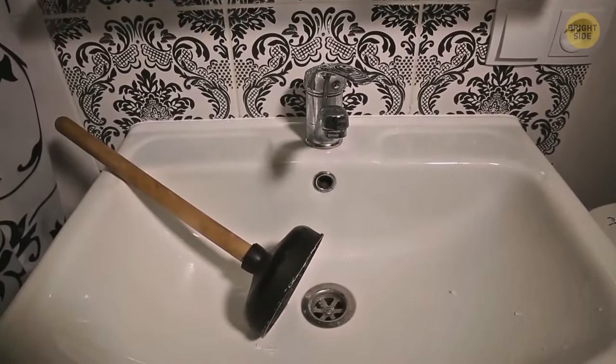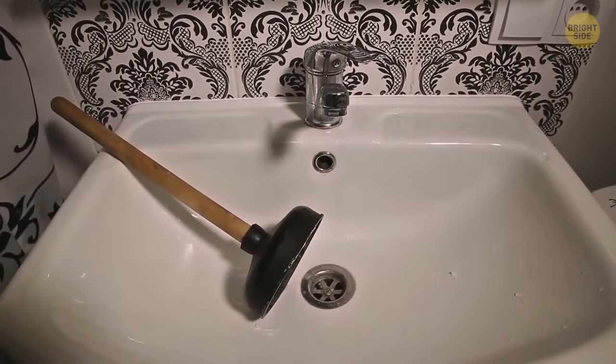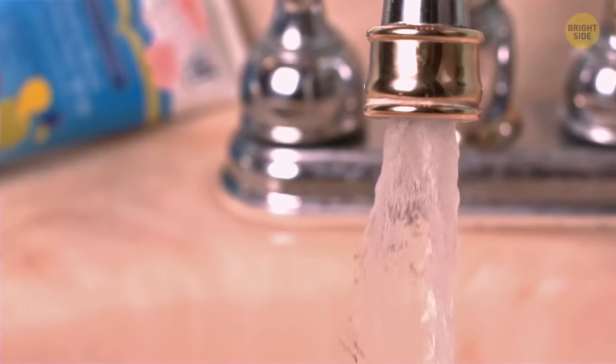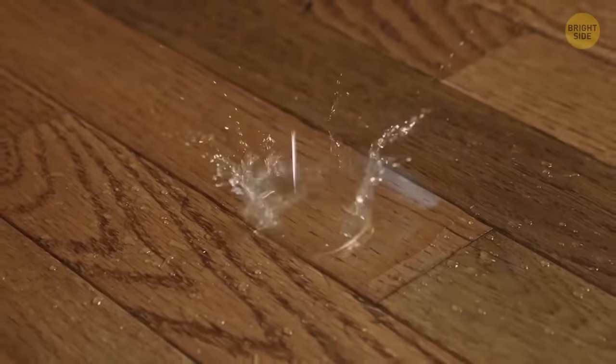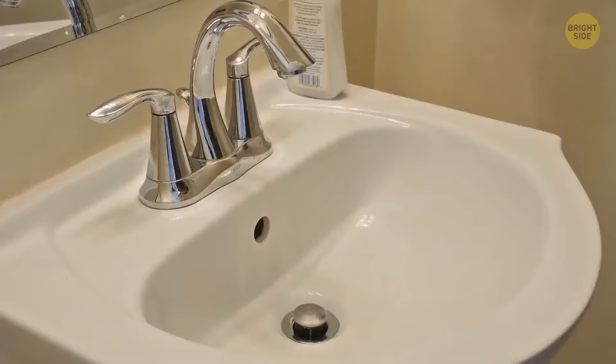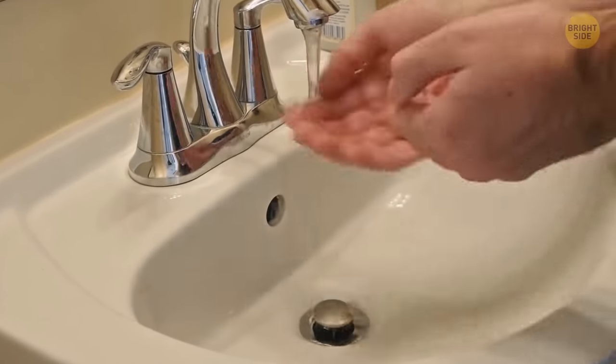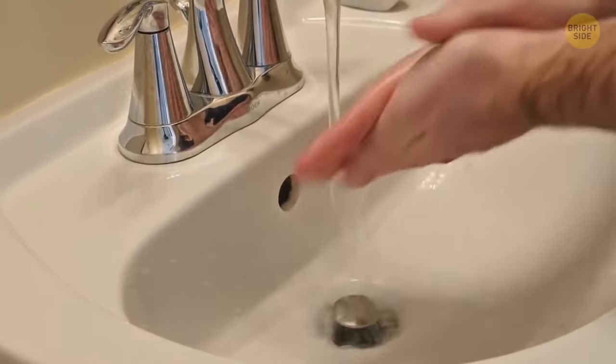An extra hole at the upper part of the sink has multiple hidden functions. First, in case someone forgets to close the tap, the water won't overflow and the bathroom won't get flooded. Second, thanks to that hole, the water drains faster as it gives an escape for the air, helping the water flow down.